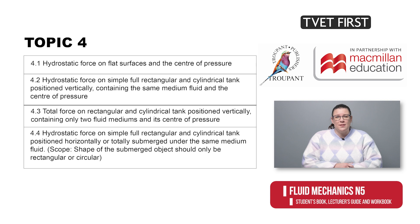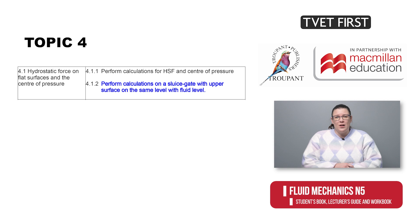In topic 4, which links to the former section 7.7, pressure distribution diagrams have been taken out. The required simple geometric and curved surfaces have been specified more closely. Calculations involving a sluice gate are new.